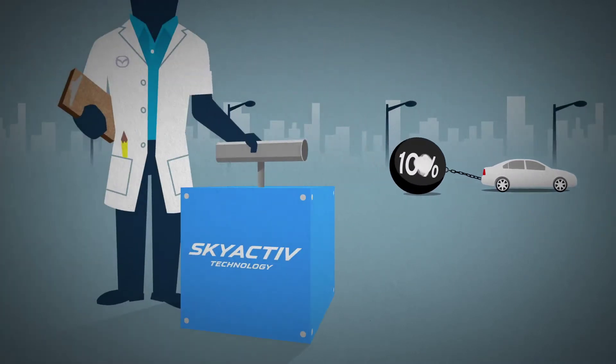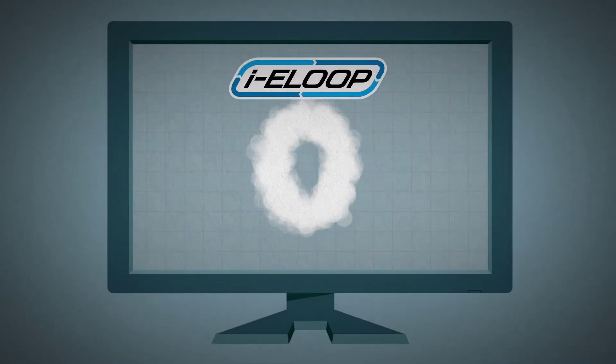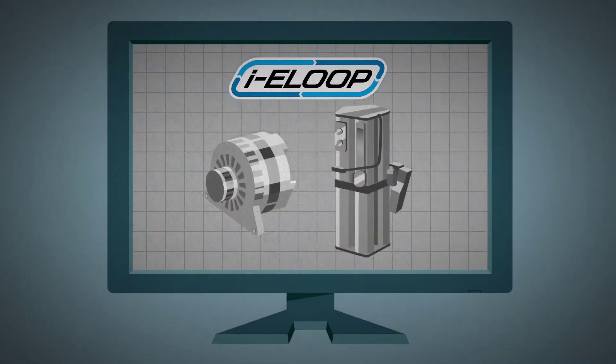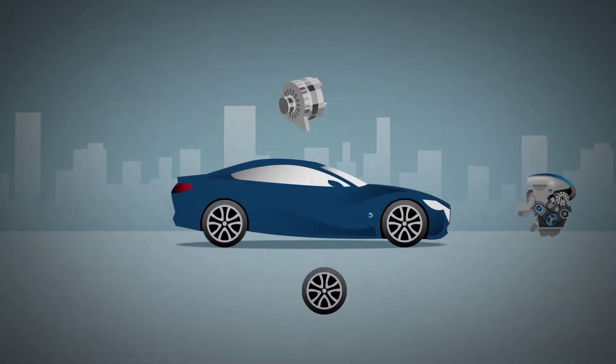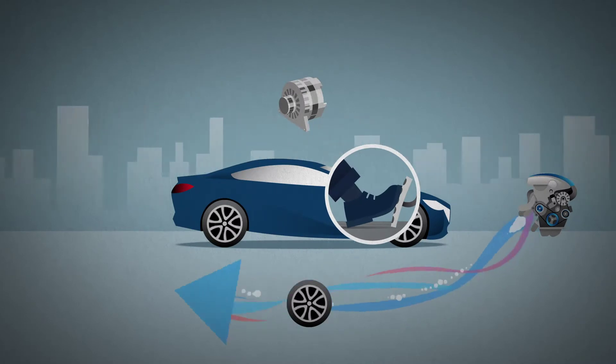But we invented a way to reduce that to zero. i-ELOOP, a regenerative braking system that recovers wasted energy. It uses a special alternator that freewheels when the engine moves the car.